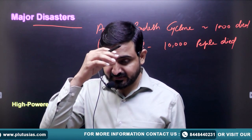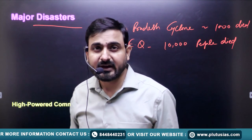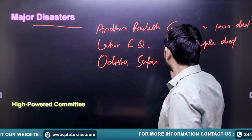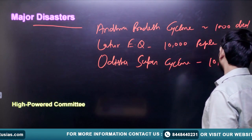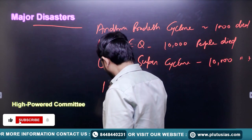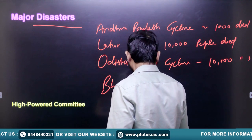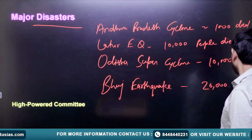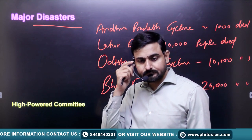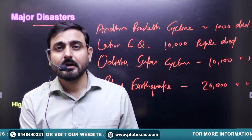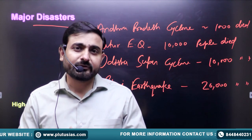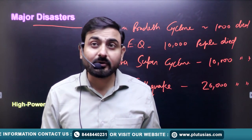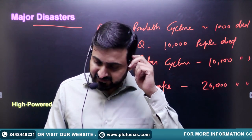Just after the Latur Earthquake, there was the Odisha Super Cyclone in 1999, in which also near about 10,000 people died. In the Bhuj Earthquake, more than 20,000 people died. All these disasters forced the Government of India to think more seriously and follow the guidelines established during the International Decade of Disaster Risk Reduction.